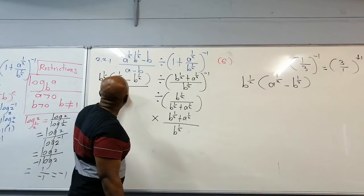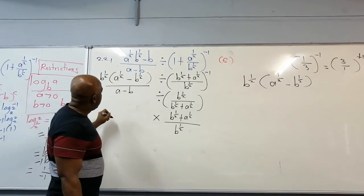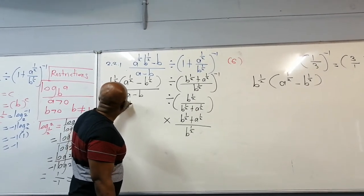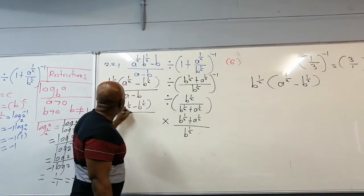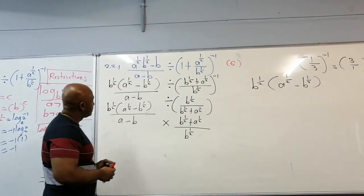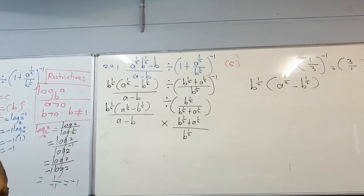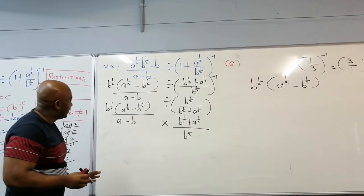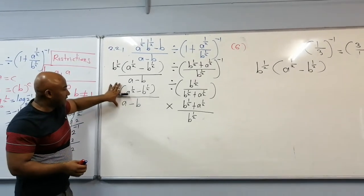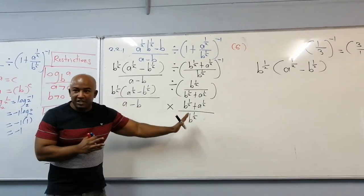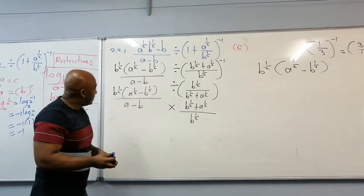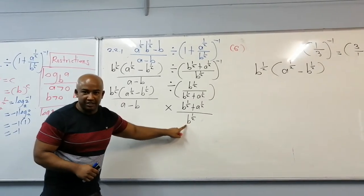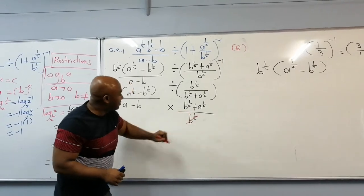That's all divided by a minus b. We have b to the power half times the quantity a to the power half minus b to the power half, over a minus b, multiplied by a to the power half plus b to the power half. The b to the power half terms cancel, leaving a to the power half minus b to the power half, divided by a minus b, times a to the power half plus b to the power half.